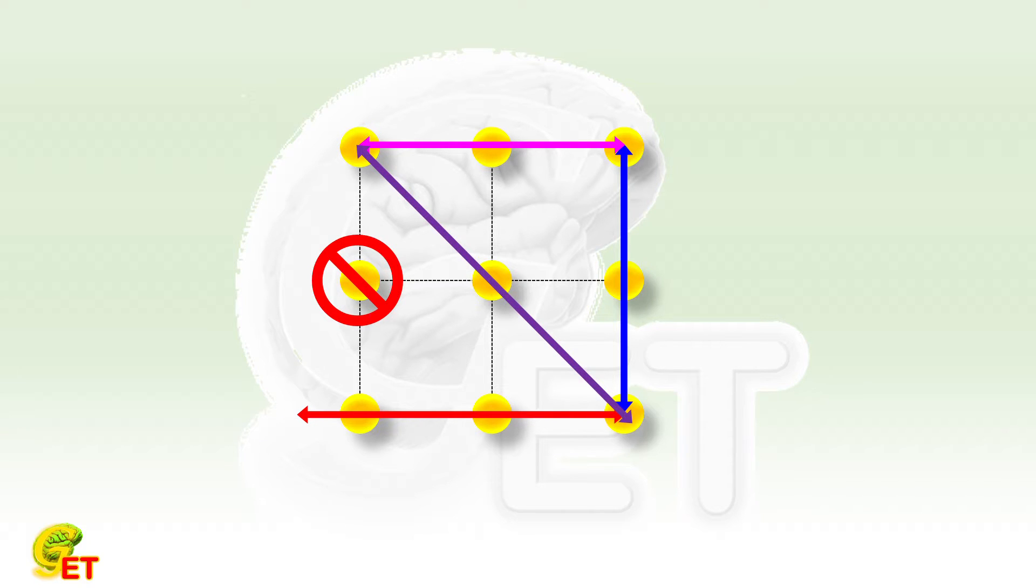Once we find a way to use 4 straight lines to connect all the 9 points, then we may use the intersections of the lines as the end points of the line segments. Like this,